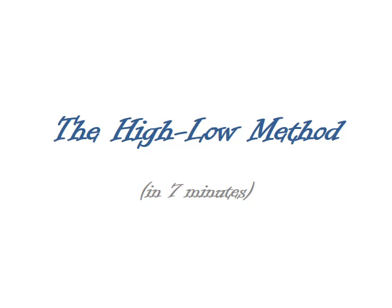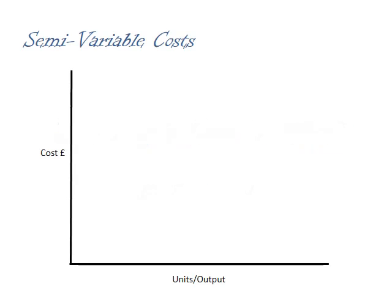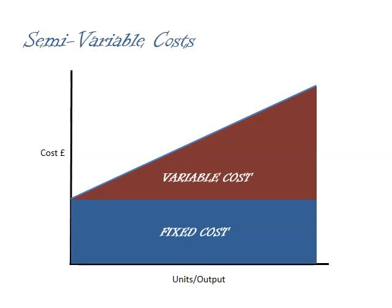In this session, we're going to look at the high-low method. The high-low method is used when we're dealing with semi-variable costs, and it enables us to estimate a cost at a particular level of output. Semi-variable cost increases as output increases, but even when output is zero, we would still expect to incur a certain level of cost. We can say that a semi-variable cost is, in fact, a fixed cost and a variable cost combined. And the high-low method is one way that we can use to identify these two cost elements.